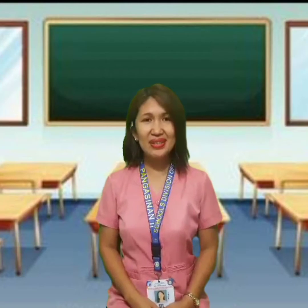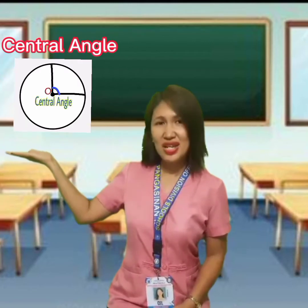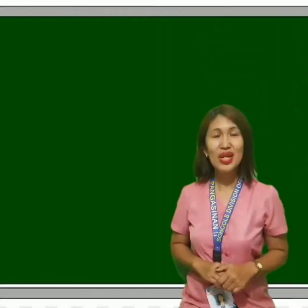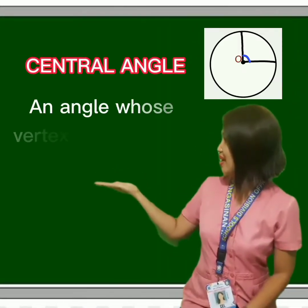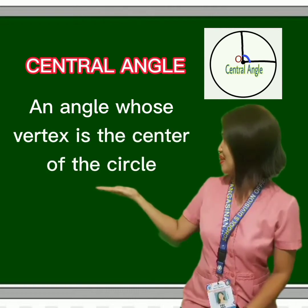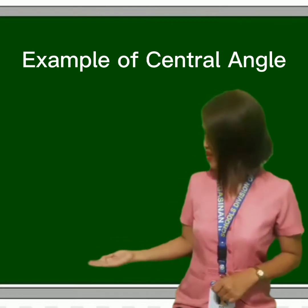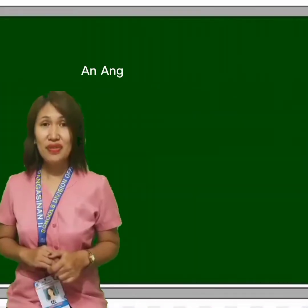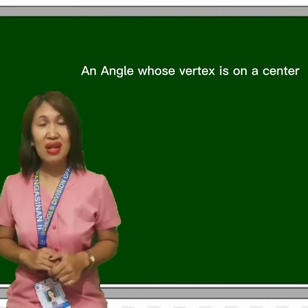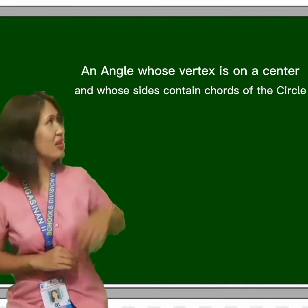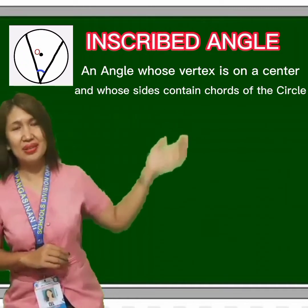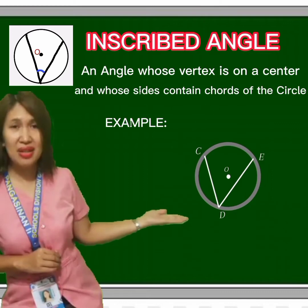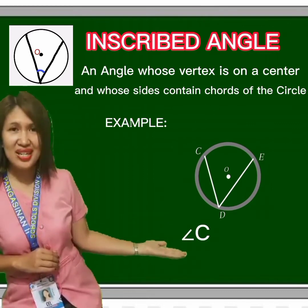There are angles on the circle. A central angle is an angle whose vertex is the center of the circle. For example, the central angle of this figure is angle MON. If the vertex of an angle is on the circle and the sides are chords of the circle, then it is called an inscribed angle. In this figure, the inscribed angle is angle CDE.